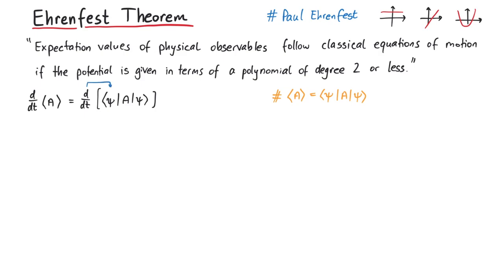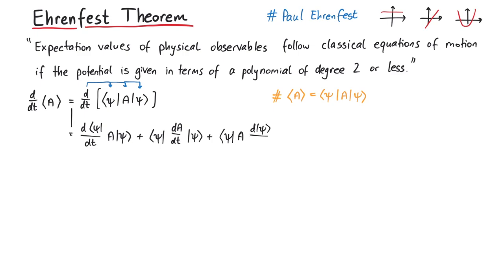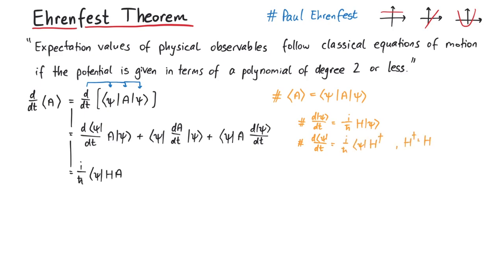The first thing we need to do is use the product rule, which gives us three terms. In the first and last terms, we can use the abstract Schrödinger equation in order to replace the time derivative of the ket and bra states. Next, we collect the first and third terms together and write the operators in terms of a commutator.